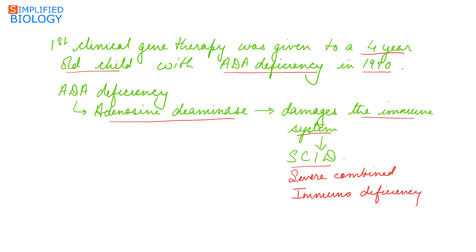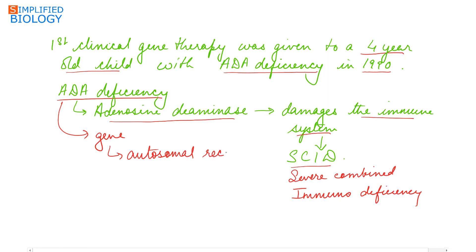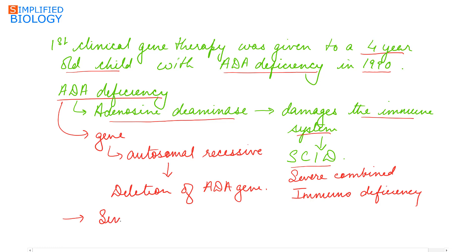The ADA deficiency gene responsible for SCID disease is an autosomal recessive gene. It is a rare defect that has developed due to deletion of the ADA gene, and this is a single gene defect that can be rectified by gene therapy.